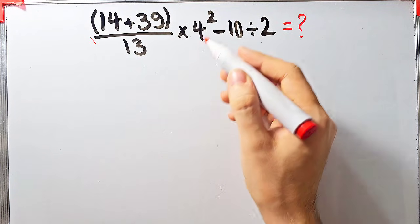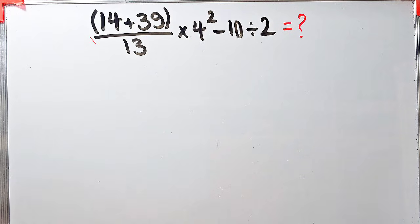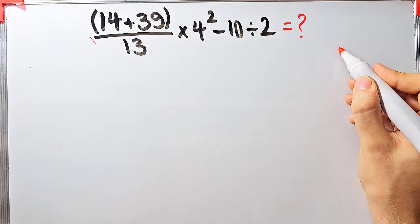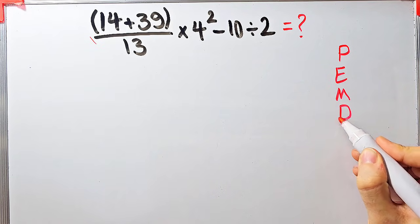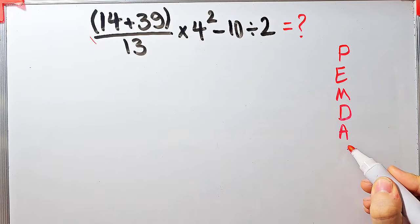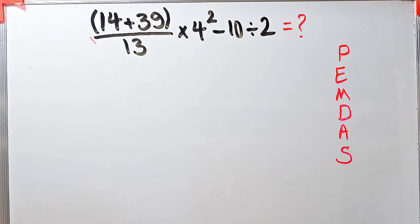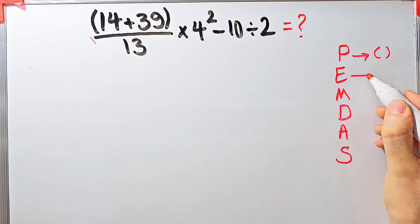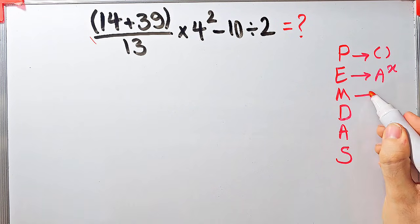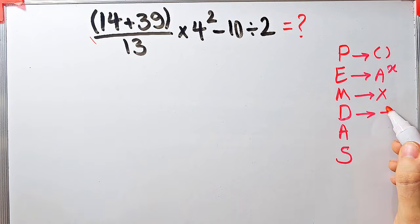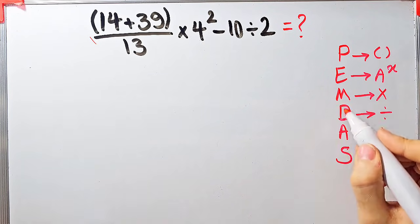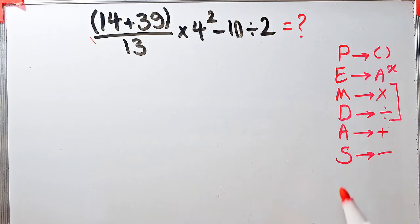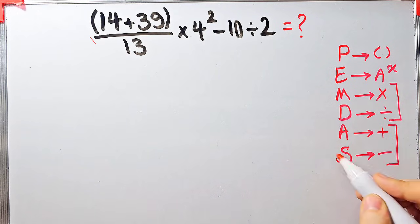In this question we have parenthesis, addition, multiplication, exponents, subtraction, and division. To solve this question we need to follow the order of operations, which is PEMDAS. PEMDAS shows the priority of the mathematical operations, and if you don't pay attention to this rule you get the wrong answer. P stands for parenthesis, E stands for exponent, M stands for multiplication, D stands for division, A stands for addition, and S stands for subtraction. Multiplication and division have the same level of priority; addition and subtraction also have the same level of priority. When we have both in an expression, we start from the left and simplify.